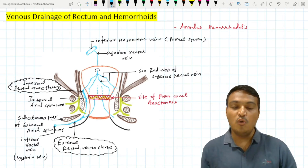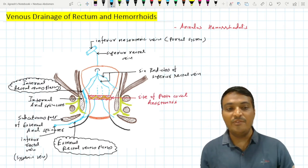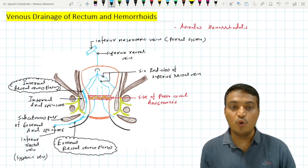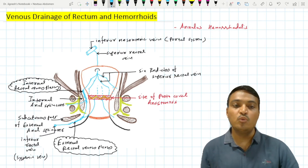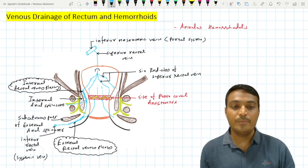Therefore, the area of the pectinate line is the site of portocaval anastomosis. Along with the superior and inferior rectal veins, the middle rectal veins also drain the internal rectal venous plexus and empty into the internal iliac vein.